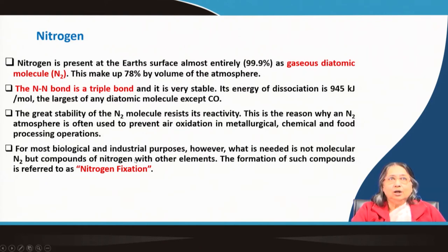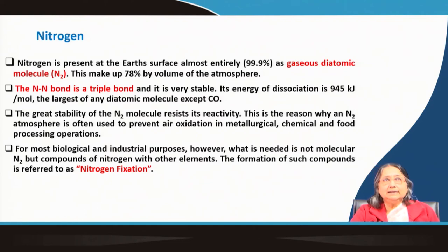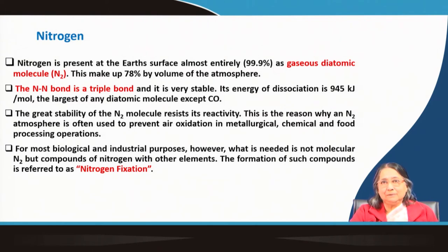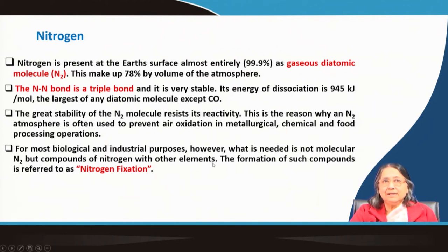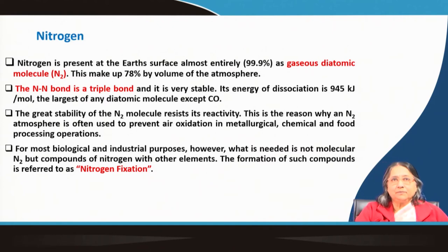The most important thing is that we do not need molecular nitrogen — we need the compounds of nitrogen. Plants take up nitrogen; we need nitrogen very much for our biological systems. In amino acids, proteins, DNA, and urea, nitrogen is present in combined state, not in the zero oxidation state. The formation of such compounds is referred to as nitrogen fixation.